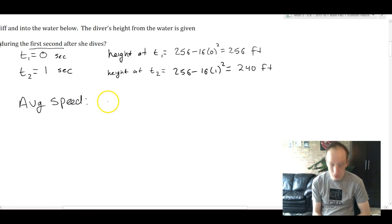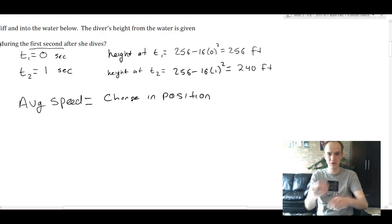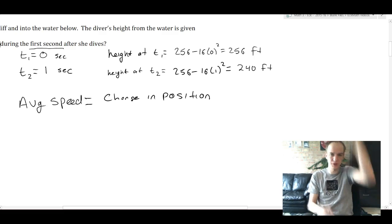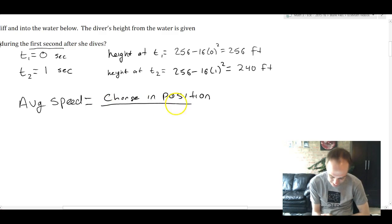To find the average speed, speed is distance over time. So we're going to take the change in position. I'm using the word position here instead of height because depending on the problem, position could be vertical position like this one or horizontal position. It's basically distance. It's our fancy word for distance over the change in time.